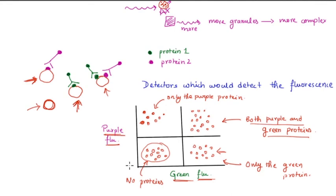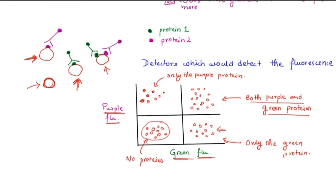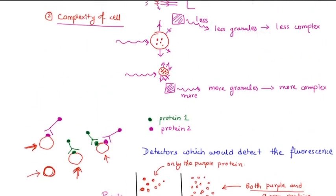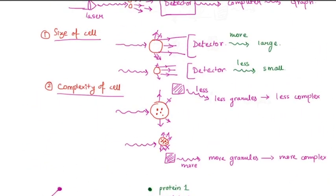So that is how we can detect the surface proteins of the cells through antibodies which are tagged with fluorescent dyes, and we can also detect the size and the complexity of the cells.